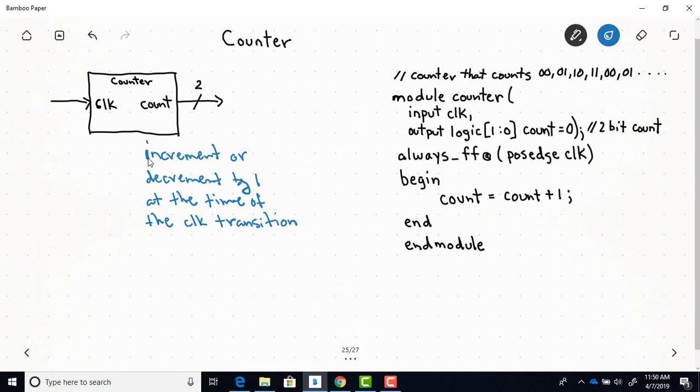So if you have a rising edge triggered counter, every time there's a 0 to 1 transition of the clock, it will either increase by 1 in binary or decrease by 1 in binary. And over here, this is the system Verilog code.